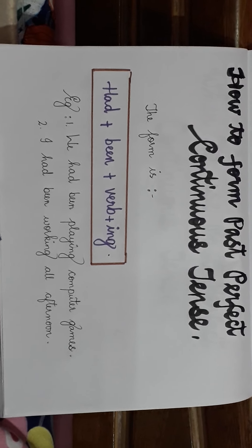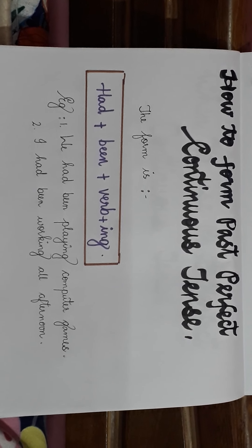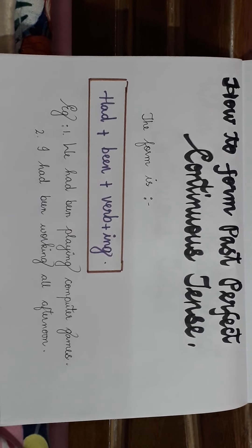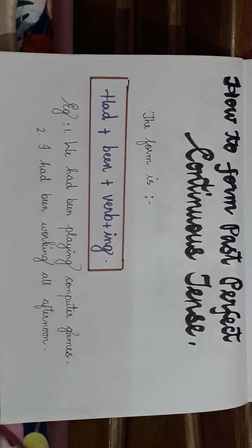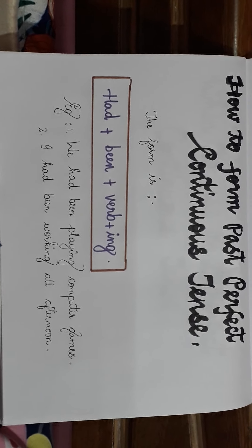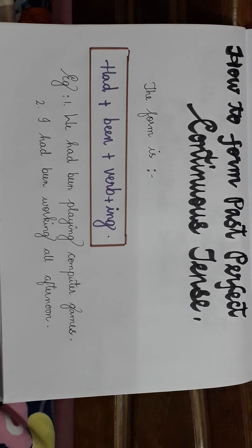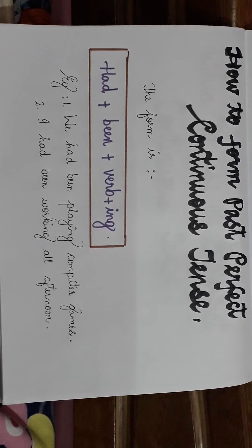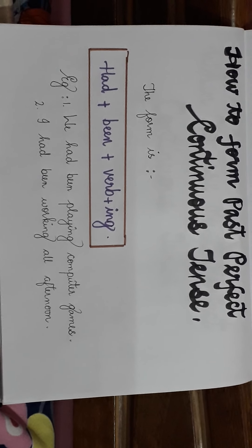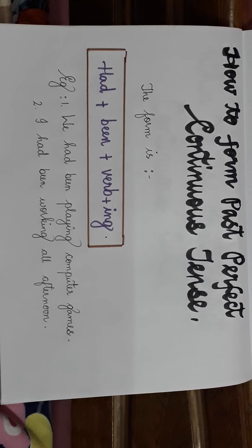How do we form past perfect continuous tense? The form is: had + been + verb + ing. Example: 'We had been playing computer games.' Another example: 'I had been working all afternoon.' So: Subject + had + been + verb + ing — this is how you form past perfect continuous tense.